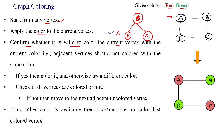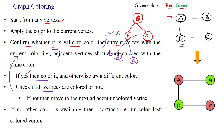After assigning red to A, we move to the next vertex. A's adjacent vertices are B and D, so we select B. B can be assigned red or green. We check validity: A already has red, and B is adjacent to A, so assigning red to B is invalid per the criteria that adjacent vertices should not have the same color. Therefore, we assign green to B.